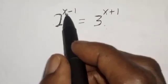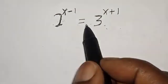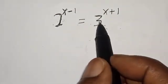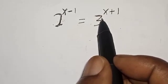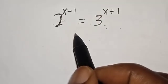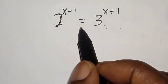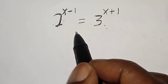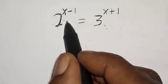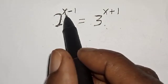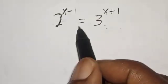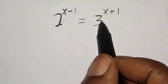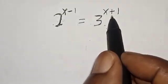2 raised to power x minus 1 is equal to 3 raised to power x plus 1. Hi everyone, welcome to my class. In this class, we want to find the value of x from this given equation: 2 raised to power x minus 1 is equal to 3 raised to power x plus 1.